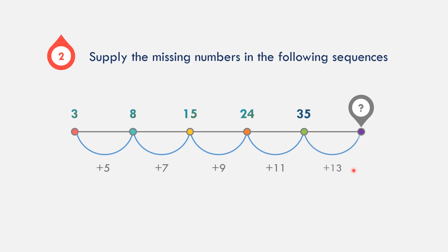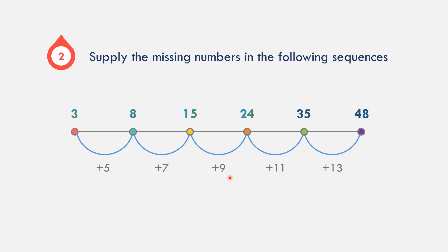35 plus 13 is equal to 48. As you can see, each time we add 2 more: 5, then 7, then 9, then 11, then 13. So 24 plus 11 is 35, and 35 plus 13 is 48. The missing numbers are 35 and 48.